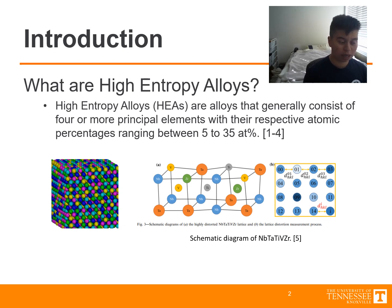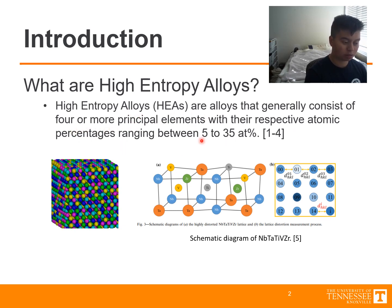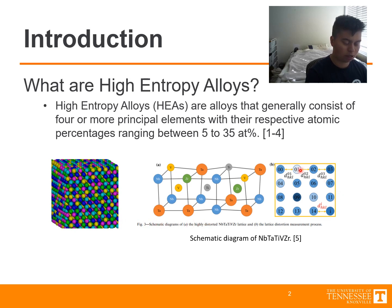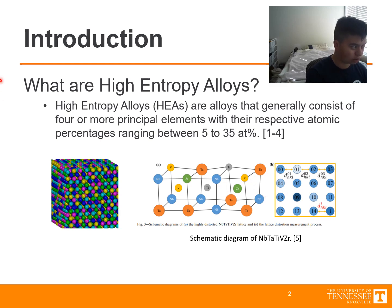Now, what are high entropy alloys? High entropy alloys are defined as alloys that consist of four or more principal elements with respective atomic percentages ranging between five to 35 atomic percent. Here we can see two 3D renditions of what the configurational entropy looks like in most high entropy alloys, as well as a view of the lattice distortion among high entropy alloys in general.